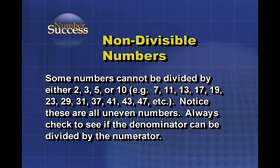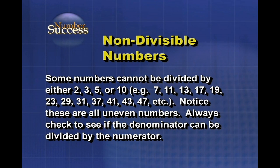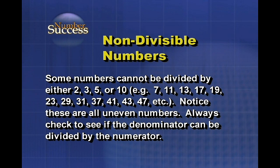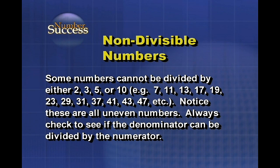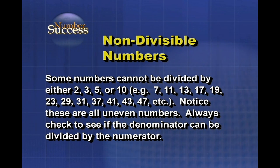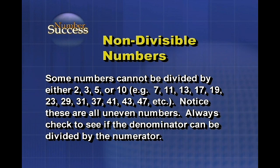Non-divisible numbers: some numbers cannot be divided by 2, 3, 5, or 10. Examples include 7, 11, 13, 17, 19, 23, and 29. These are prime numbers, which only have two factors: 1 and themselves. Notice these are all odd numbers.